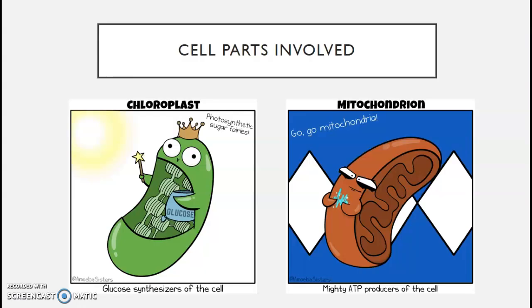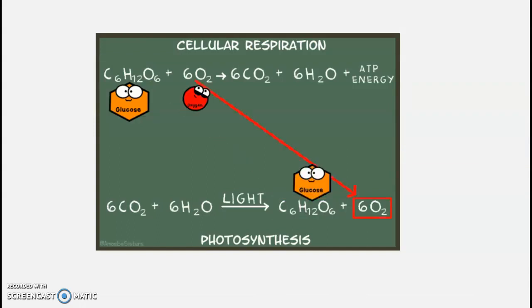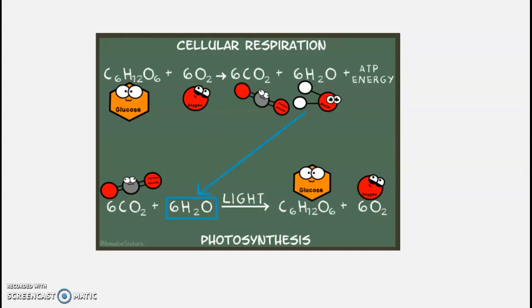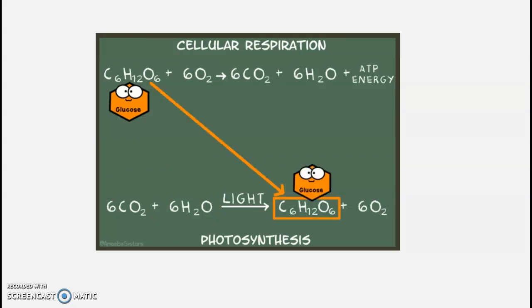The cell parts involved in cell respiration include the mitochondria, because this is where the energy is actually made. However, that food first must be produced in the chloroplasts of plant cells. These processes work in a cycle — the products of photosynthesis are the reactants of cellular respiration, and the products of cellular respiration are the reactants of photosynthesis.